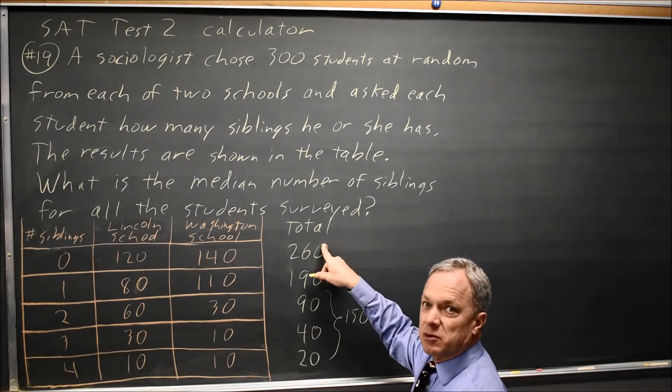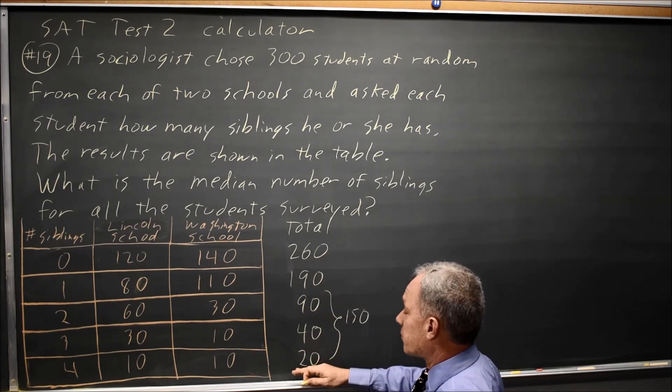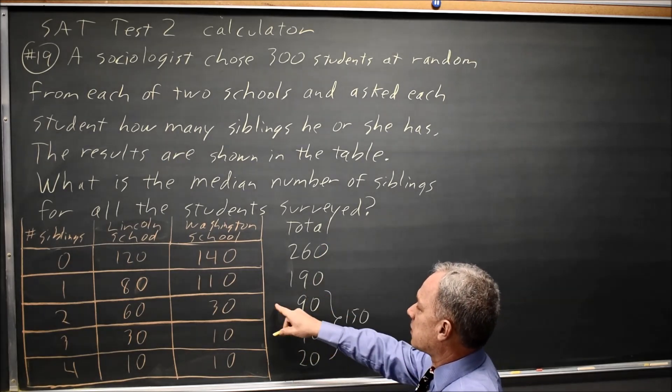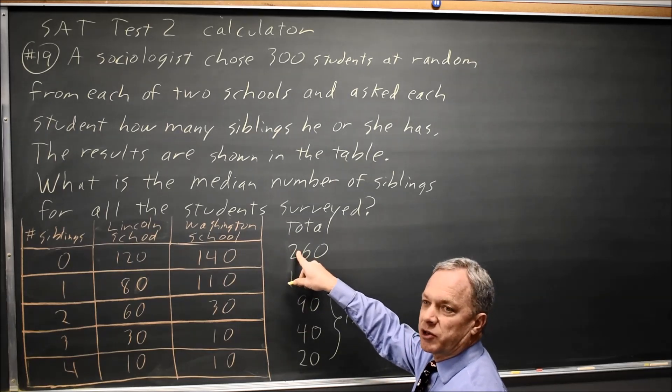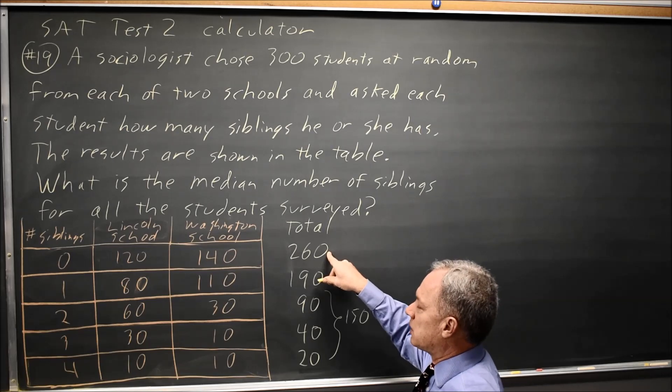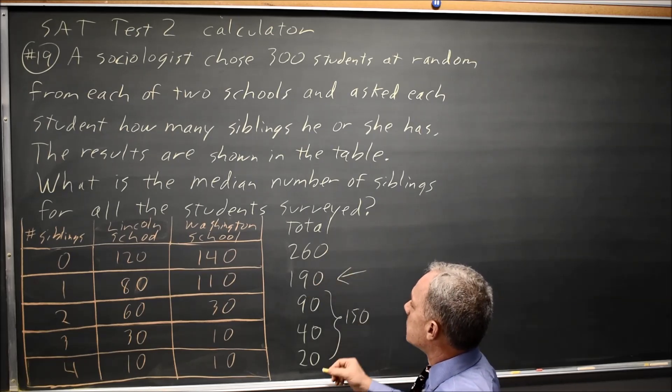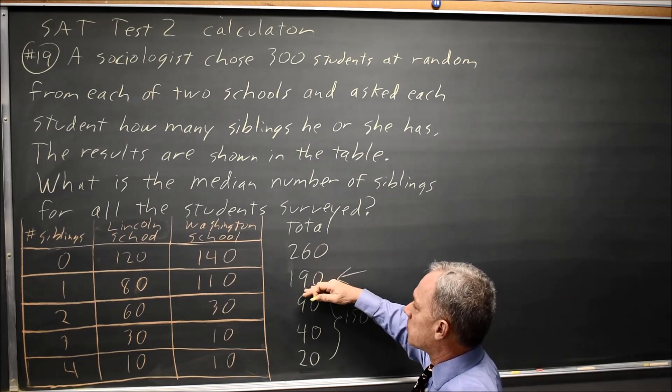The median can't be 0 because I won't have 300 values more than the median if the median were 2. If the median were 0, I don't have 300 values less than even the last 0 on the list if I list them in order. So the median has to be in the middle because 260 plus 190 is 350.